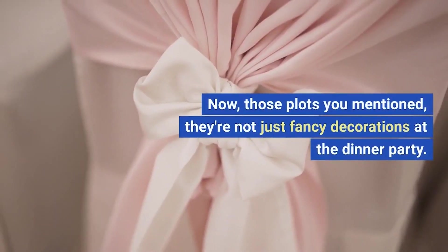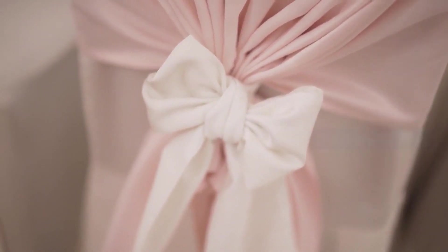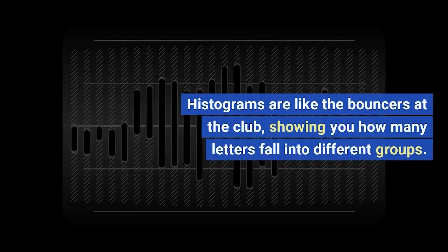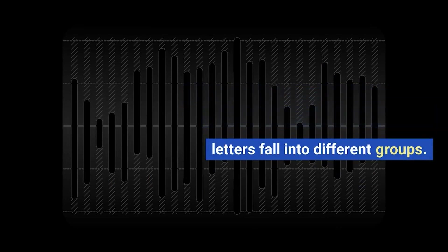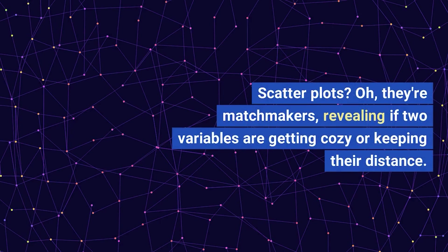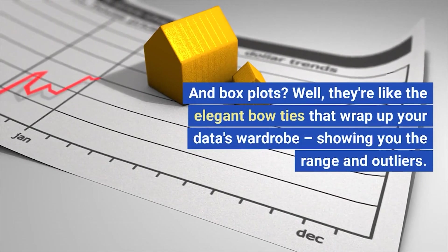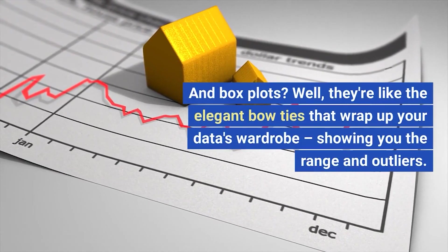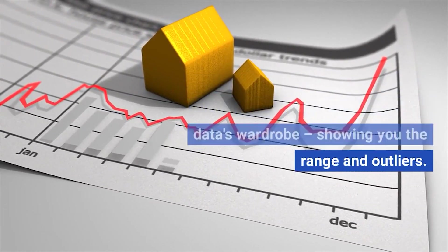Now, those plots aren't just fancy decorations at the dinner party. Histograms are like the bouncers at the club, showing you how many values fall into different groups. Scatter plots are matchmakers, revealing if two variables are getting cozy or keeping their distance. And box plots? They're like the elegant bow ties that wrap up your data's wardrobe, showing you the range and outliers.